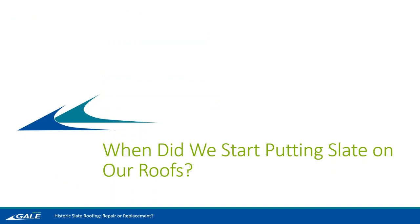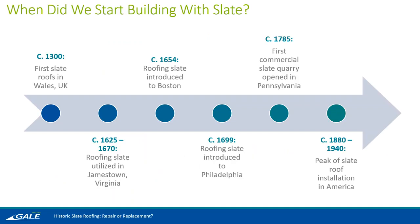Now to get a bit into the history of slate. This timeline starts around 1300, which is when the people of Wales really started to develop a systematic approach to quarrying slate and using it as a roofing product. There is evidence of slate being used as a roofing material dating all the way back to Roman times. Then in the 1600s, we see slate roofing start to move to the States as people from the UK — specifically people from Wales — immigrate to America.